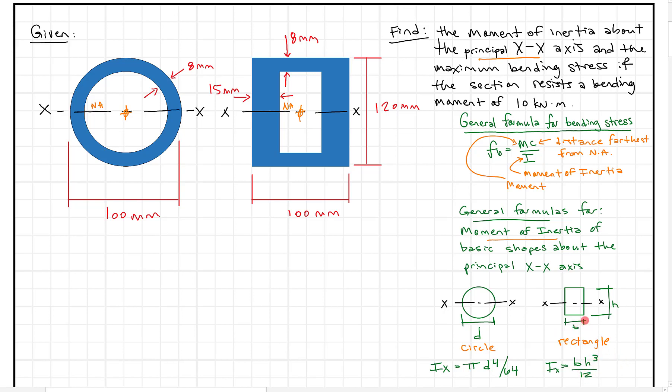B is always the dimension parallel to the neutral axis, and H is the dimension perpendicular to the neutral axis, cubed, all over 12. Those are our two formulas. Now all we have to do is plug and chug. We have our numbers — if you want, pause the video, try plugging them in, and see if you get the same answer.